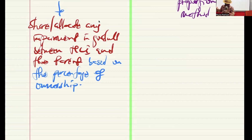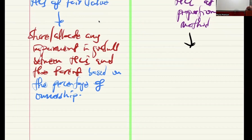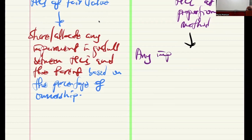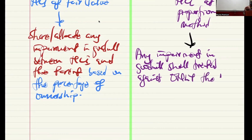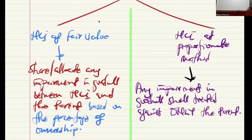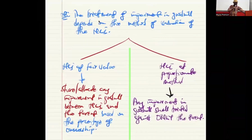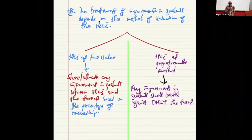But if it is the proportionate method, thou shall not share. Any impairment in goodwill shall be treated against only the parent. In other words, the parent bears the entire risk of impairment in that case. That is the idea about non-controlling interest.